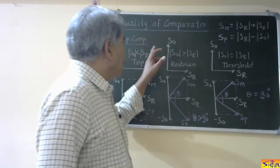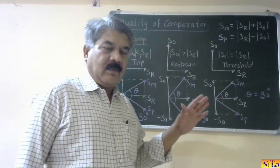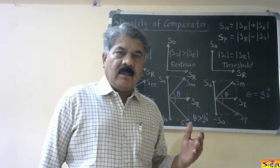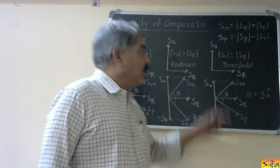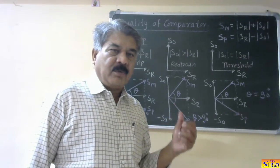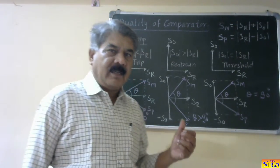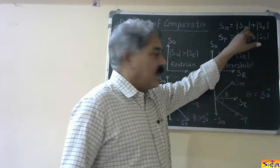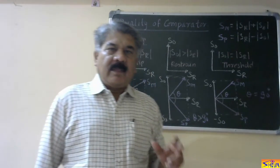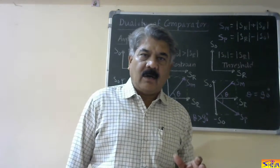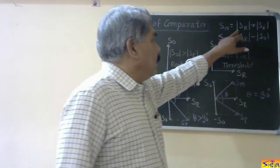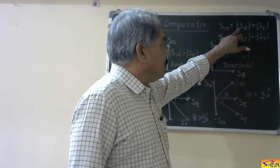First I will consider the amplitude comparator. The original input quantities SO and SR are taken: SR is the reference quantity and SO is the operating quantity. For the phase comparator, the input quantities are denoted as SM and SP, where SP is the polarizing or difference quantity and SM is the measured or operating quantity. We are changing the inputs to their sum and difference.